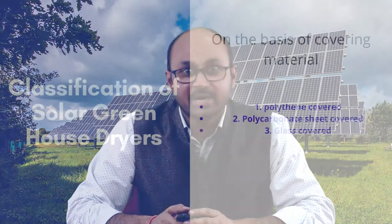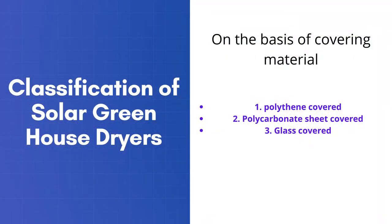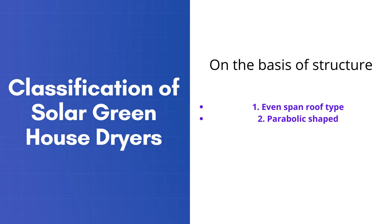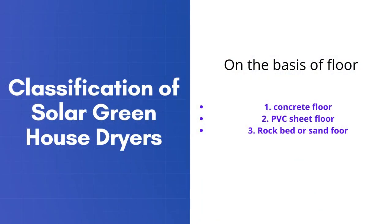We can also classify the solar greenhouse dryer on the basis of covering material — we can use polythene, polycarbonate sheet, or glass. On the basis of structure: even spare roof type or parabolic shaped. On the basis of floor: concrete floor, PVC sheet floor, rock bed, or sand floor. The idea of the greenhouse dryer is to replace the function of the solar collector by the greenhouse system. A properly designed greenhouse dryer allows a greater degree of control over the drying process than cabinet dryers and is more appropriate for large-scale applications.